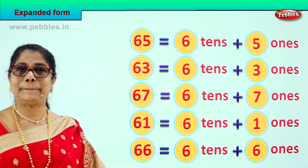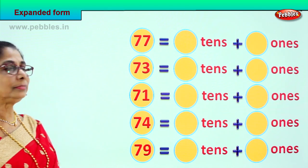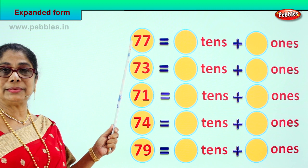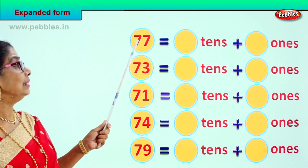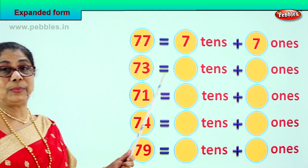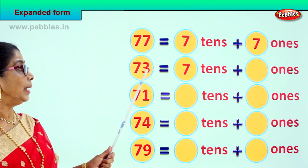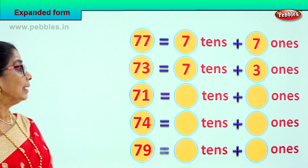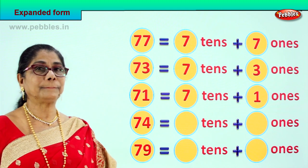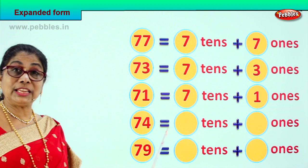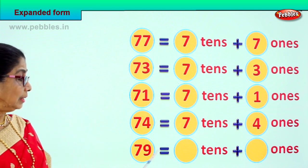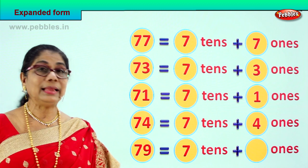Look, let's take the next set of numbers to expand. The first number is 77. How many tens? How many ones? 77 is equal to 7 tens plus 7 ones. 73 is equal to 7 tens plus 3 ones. 71 is equal to 7 tens and 1 one. 74 is equal to 7 tens plus 4 ones. 79 is equal to 7 tens plus 9 ones.